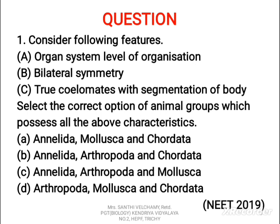Consider the following features: A) organ system level of organization, B) bilateral symmetry, C) true coelomates with segmentation of body. Select the correct option of animal groups which possesses all of the above characteristics. Here they have given four groups of organisms: A, B, C, and D.